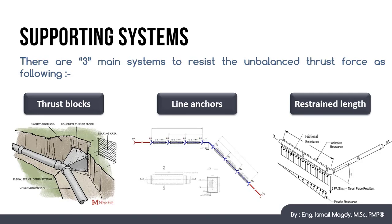There are three main systems that are normally used to support buried pipelines which are thrust blocks, line anchors, and pipeline restrained lengths. We will talk about each one of these types, how it works, and what are the advantages and disadvantages of each system.